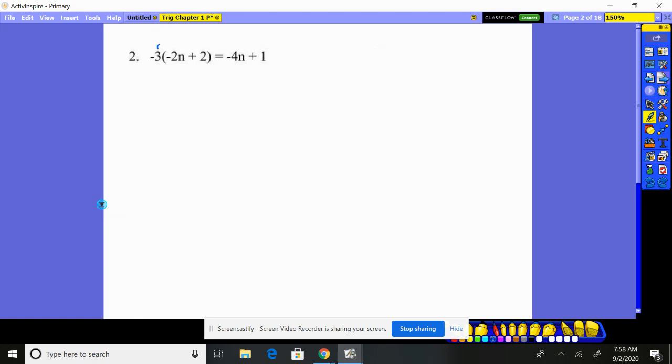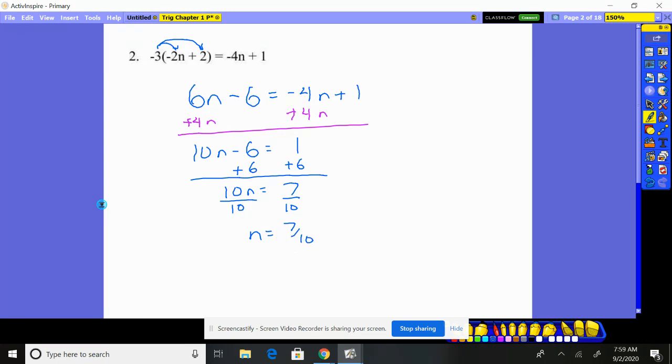Problem 2. I'm going to distribute the negative 3 through. Negative 3 times negative 2n is positive 6n. Negative 3 times that 6 is minus 6. Negative 4n plus 1. Again, I am going to move this negative 4n over. So I'm going to add 4n to both sides. Gives me 10n minus 6 equals 1. Now let's move the 6 over. 10n is equal to 7. Divide by 10. Divide by 10. I have 7 tenths or 0.7.